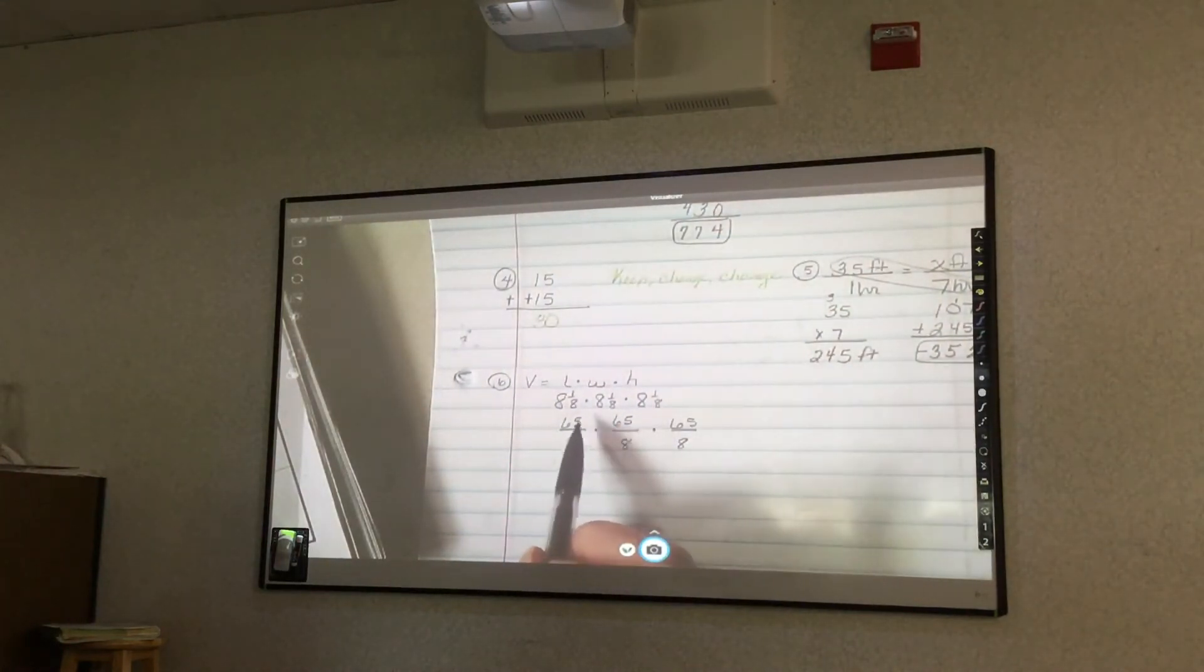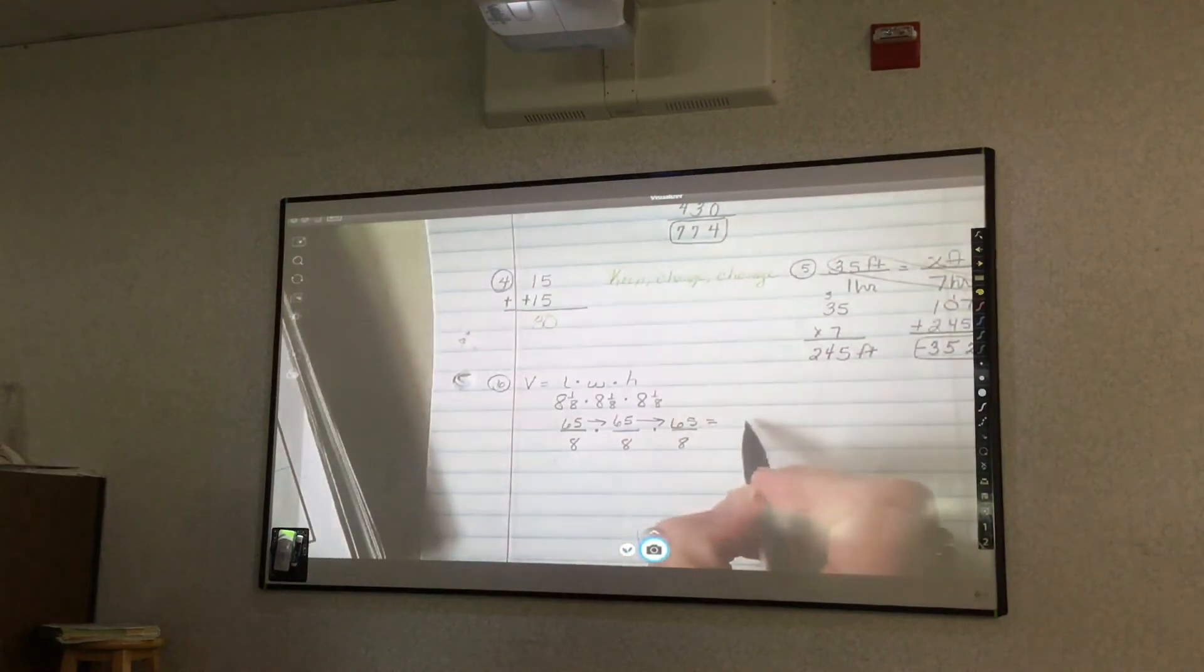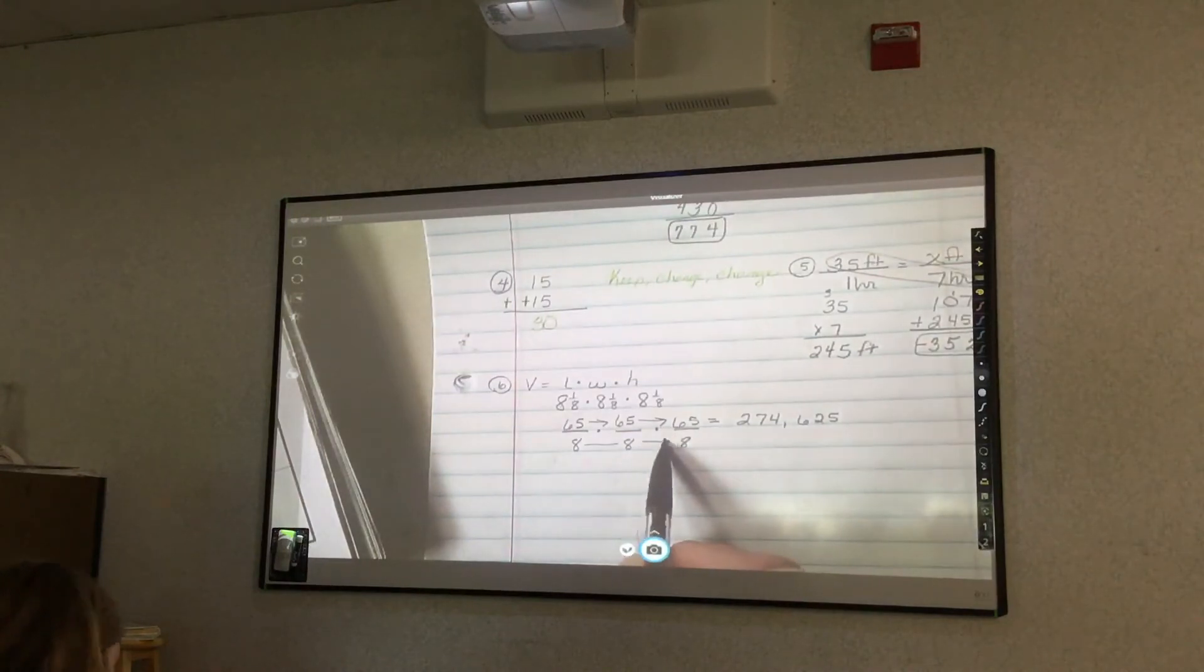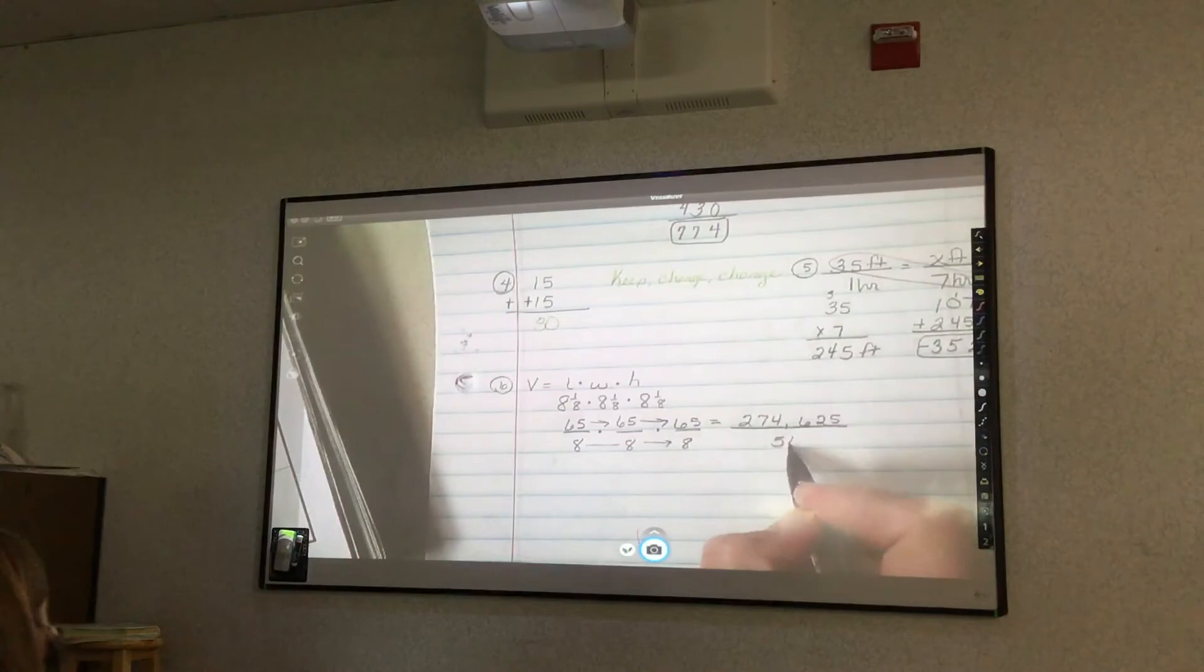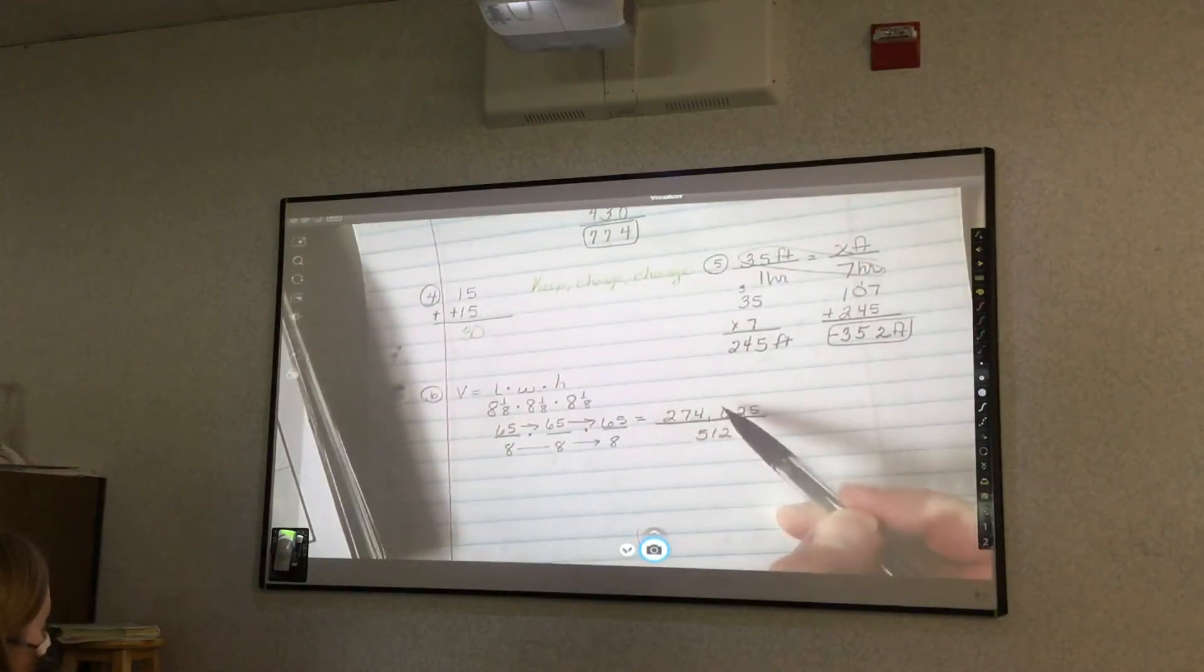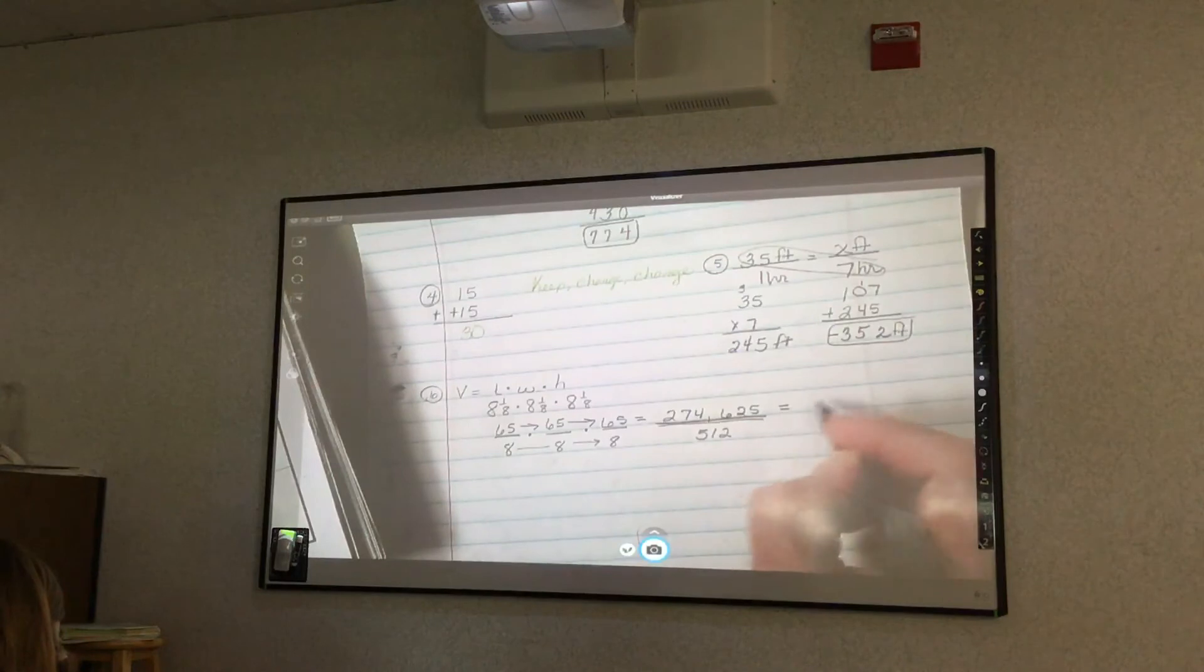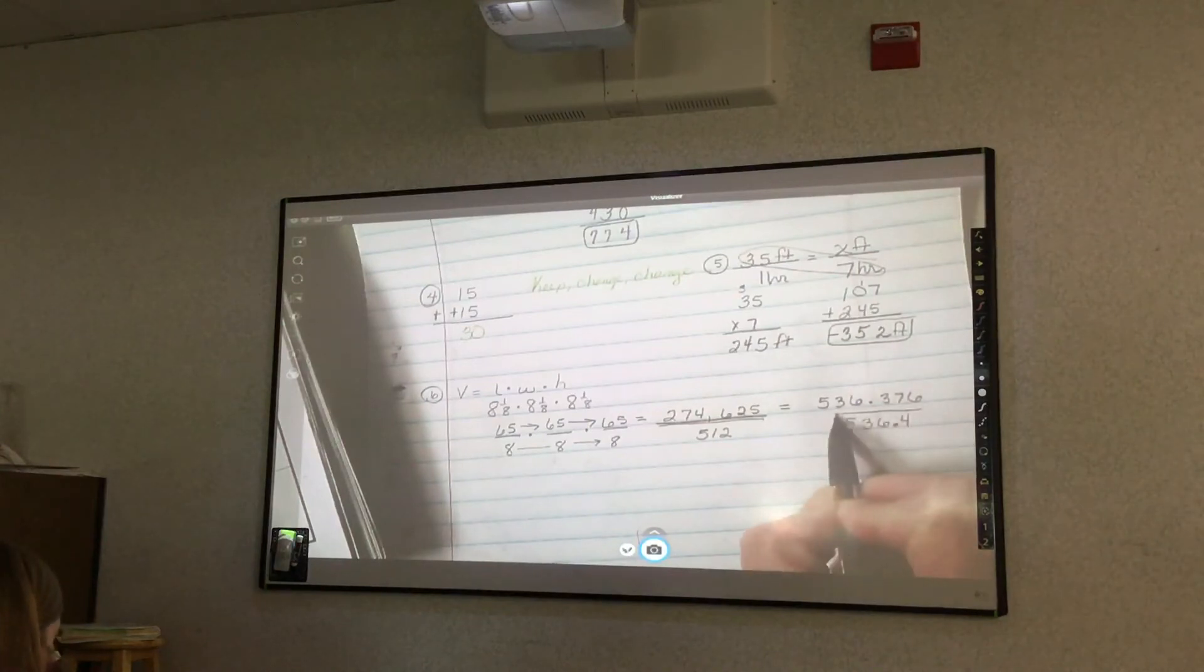So we would know, we just need to multiply now my numerators. 65 times 65, that answer times 65. And if you do that, you get, I'm just going to give you the answer, 274,625. That's a big number, but it's something that you guys can multiply. And I do 8 times 8, which is 64, then 64 times another 8. I'm going to give you that answer - 512. Would we leave our answer like this? No. What do we do? You divide. Whenever you see this symbol, our fraction symbol is always division. So after I do that in my calculator, I get 536 and 376 thousandths. And I'll just round it to the nearest tenth. And there is your volume.